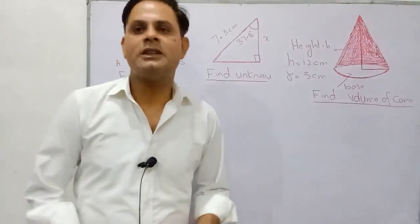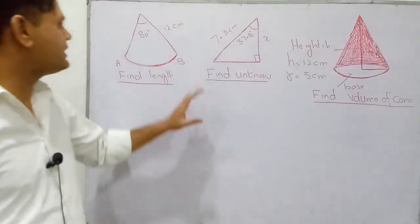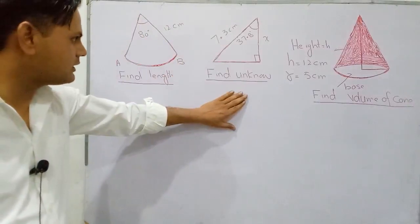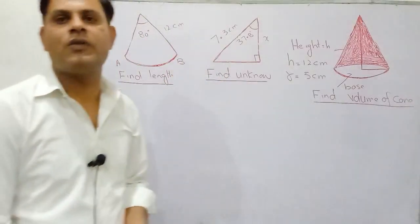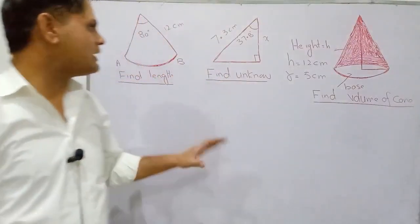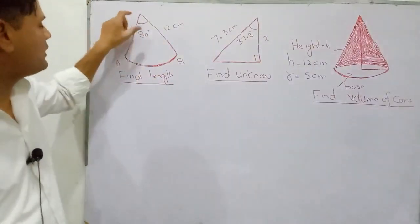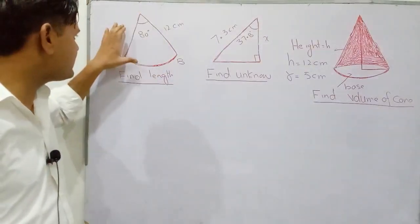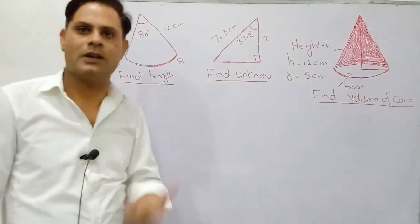Dear student, today I have three different diagrams here and some quantities are unknown. We will find these quantities. So let's start from the first one. Before starting, what is this diagram and what is the name of this diagram?